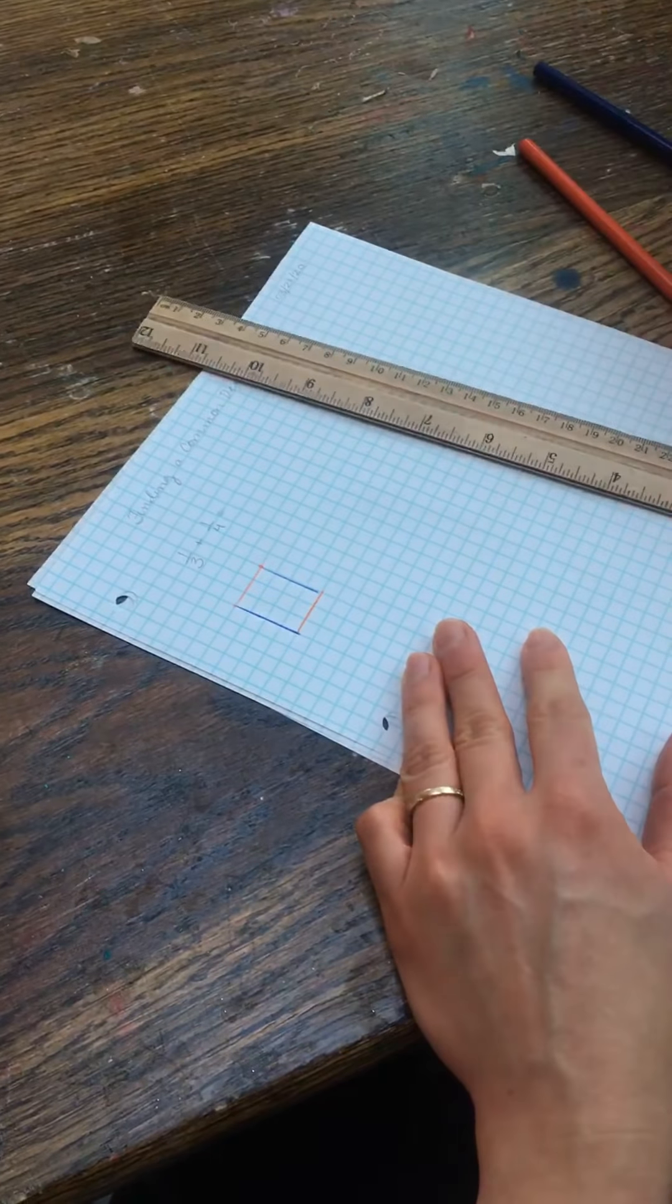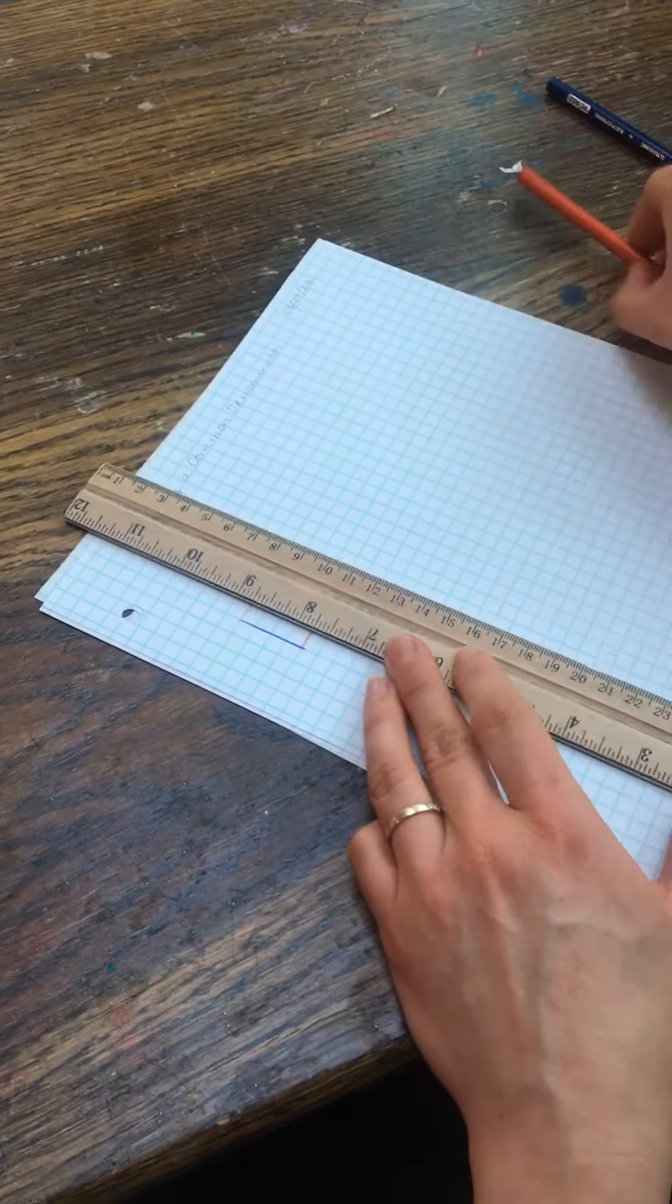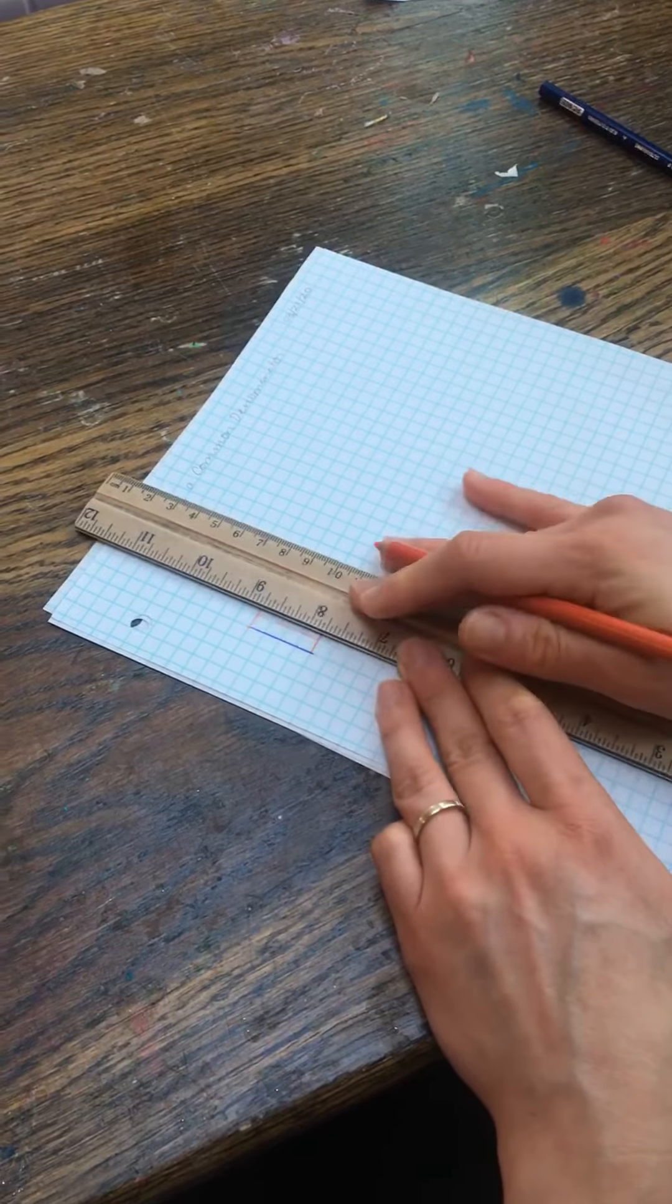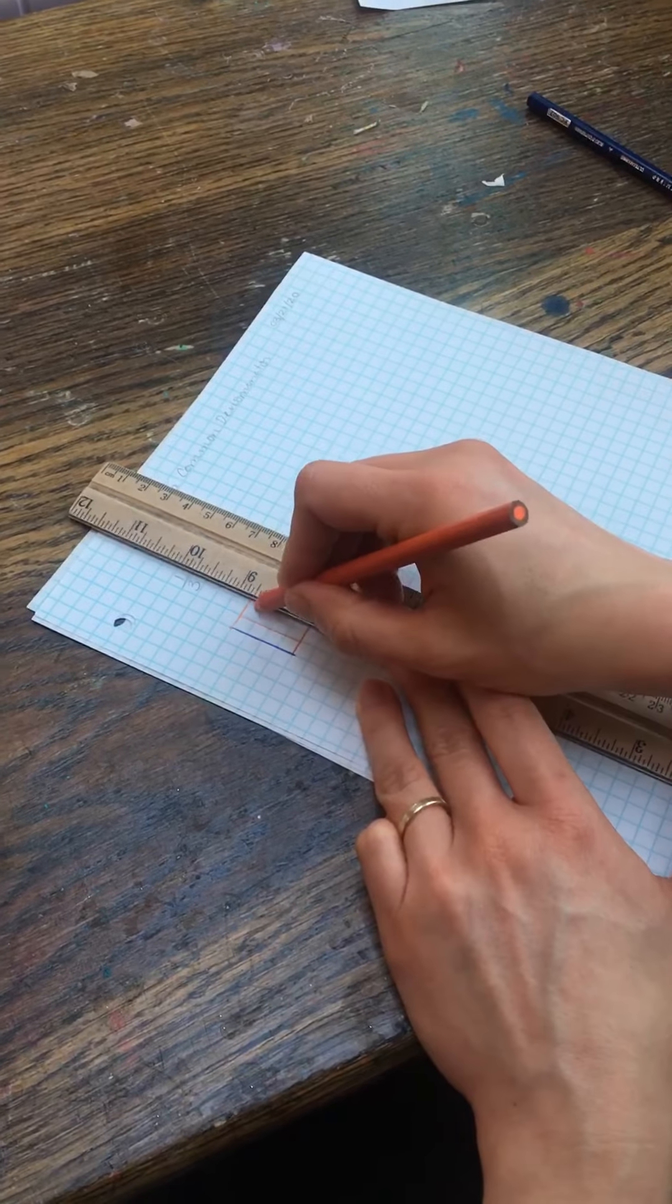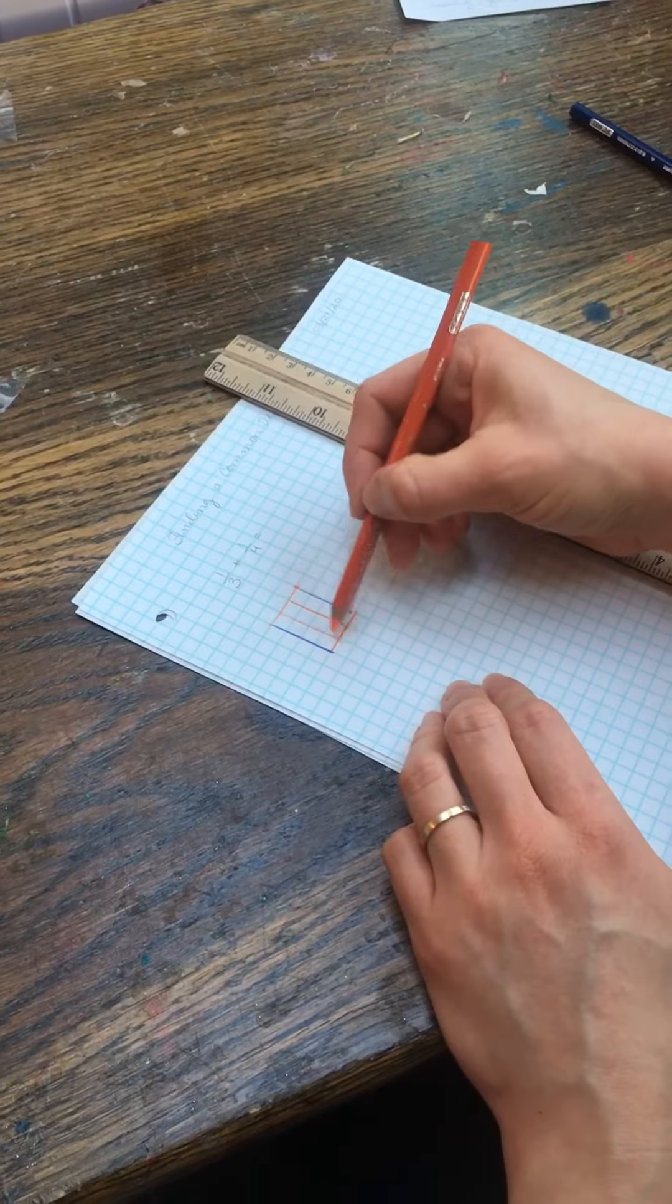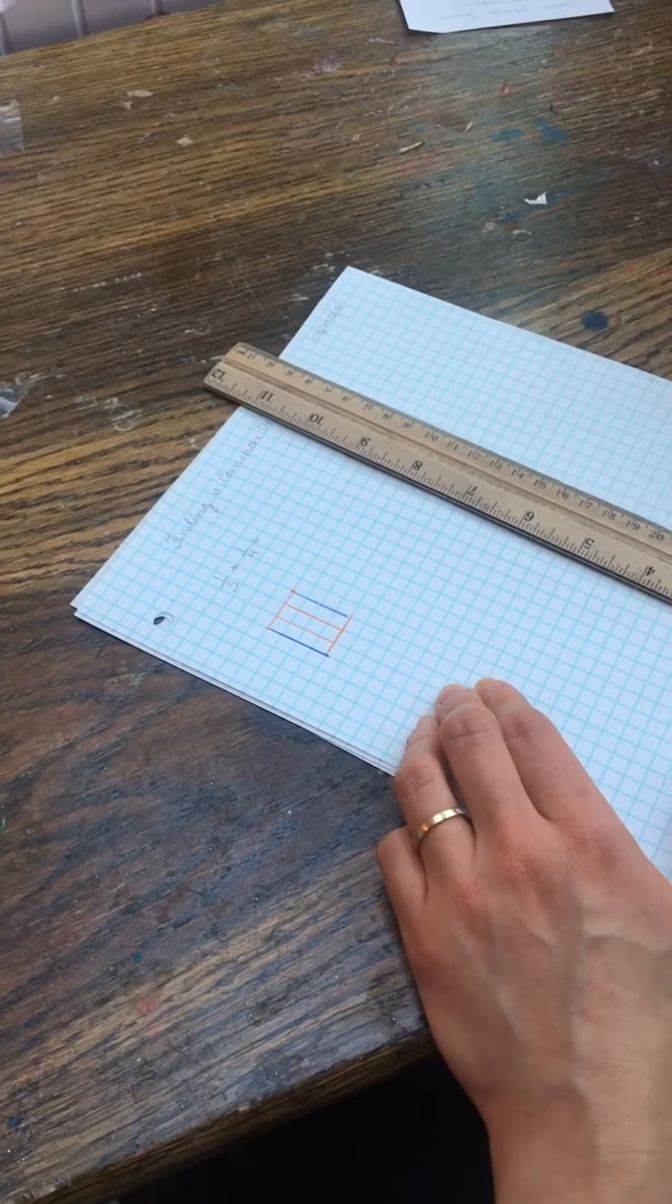Okay, so I can see my thirds. I'm going to use the same color. There's one of my thirds, there's a second third, and there's my third third. So one, two, three. My rectangle has been divided into three equal pieces.